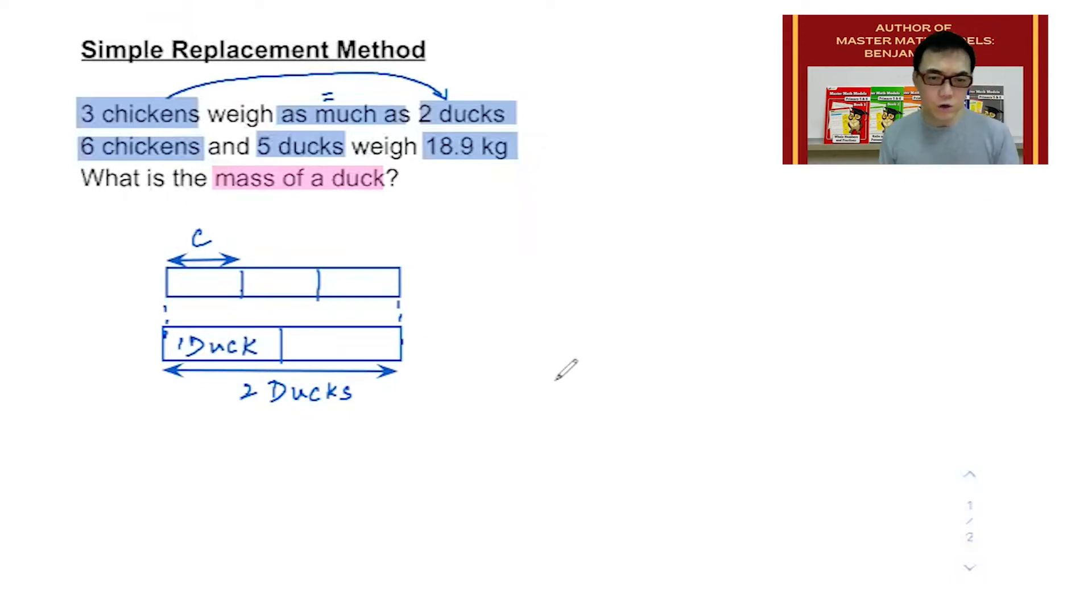Now, if we continue reading, it says that there are 6 chickens and 5 ducks. This means I should add how many more chickens behind the first three. You can pause this video if you want to think about it. The answer should be 3 more chickens, since there are 6 chickens as asked by the question.